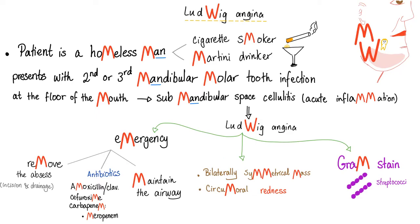Here is the mnemonic for Ludwig Angina. You see this W? Just flip it upside down to become an M. So W becomes M. And don't forget this is Ludwig. The patient is typically a homeless man who is a cigarette smoker and a martini drinker — it doesn't have to be martini, any alcohol. He presents with a second or third mandibular molar tooth infection, leading to cellulitis of the floor of the mouth, involving the submandibular space. It's an acute inflammation called Ludwig Angina.